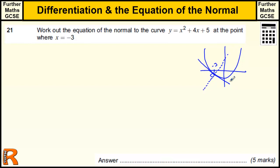So if we can work out the gradient at that point, and the way to work out the gradient of a point on a curve is to differentiate it and put that value in, we can work out the equation of the normal.